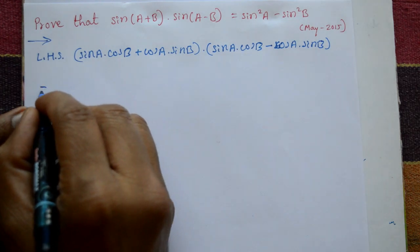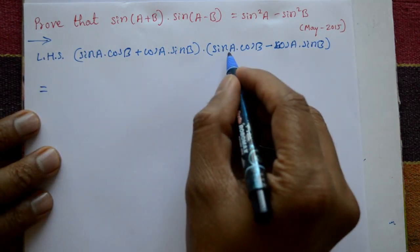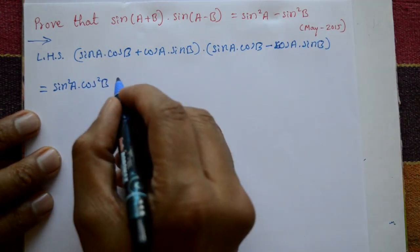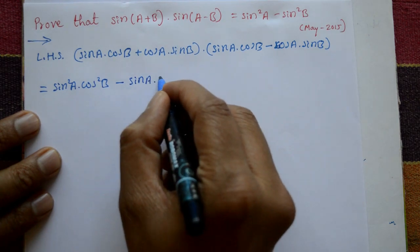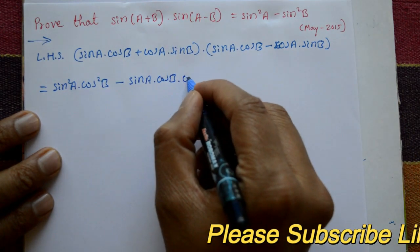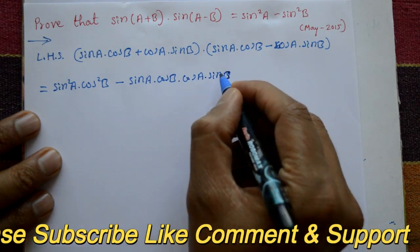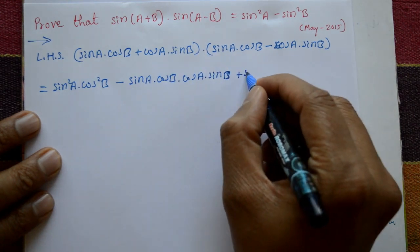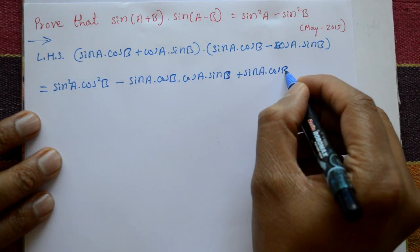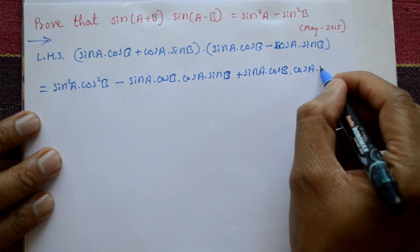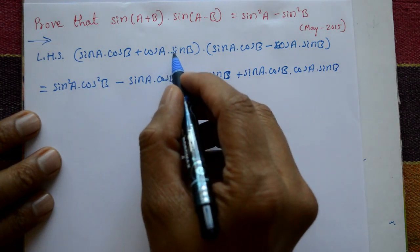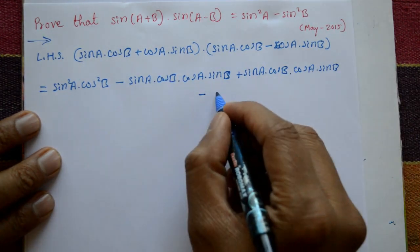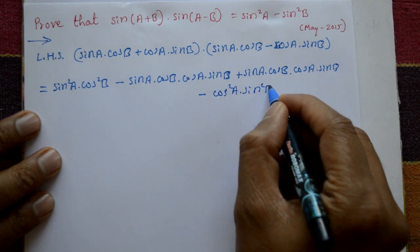Consider only the left hand side. Now multiply each term: sin a·cos b multiplied by sin a·cos b gives sin²a·cos²b. Then the cross terms: sin a·cos b multiplied by cos a·sin b, and cos a·sin b multiplied by sin a·cos b. The last term gives minus cos²a·sin²b.